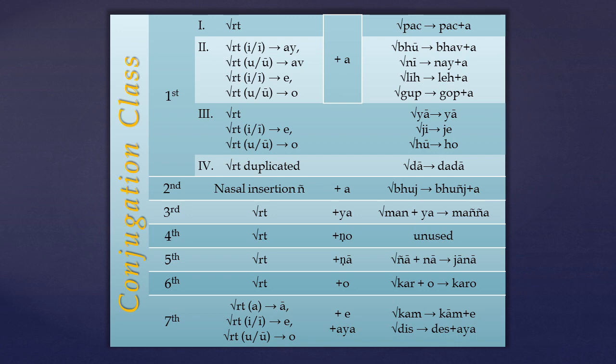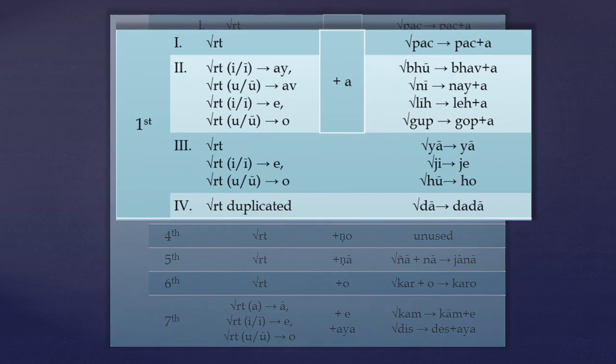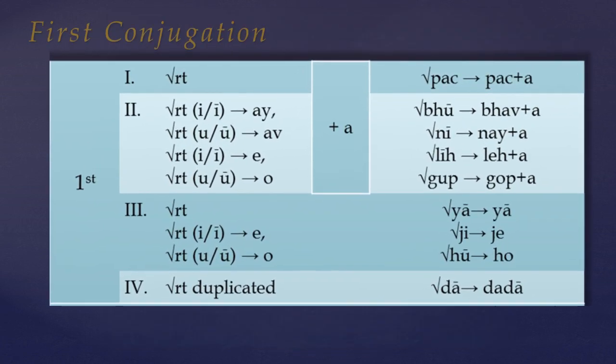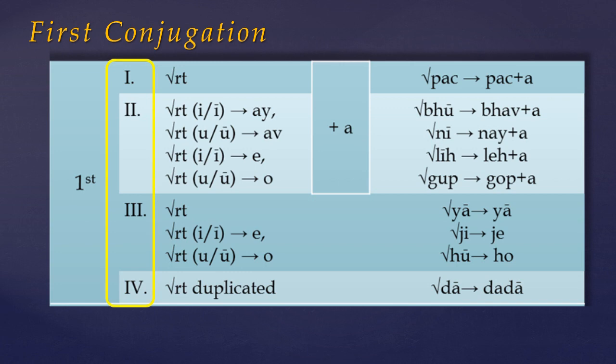Again, I must stress here that the term conjugation is used in a specialized way for a group of verbs which share a similar pattern of derivation. And in lesson one, Warder deals with just the first conjugation, so named because it's the most common. Now Warder numbers these classes from one to seven, so this first class has four subdivisions.